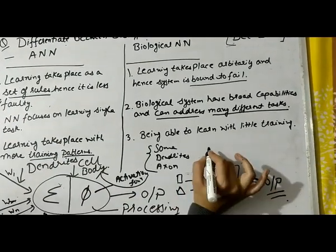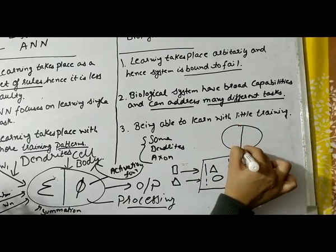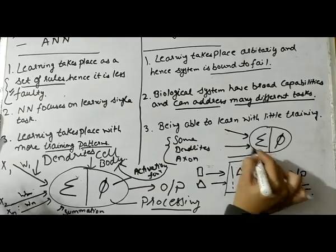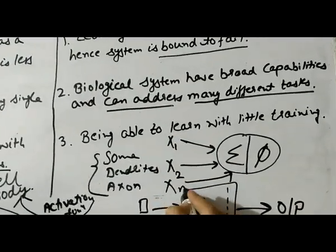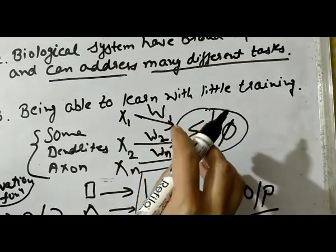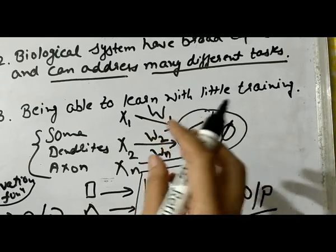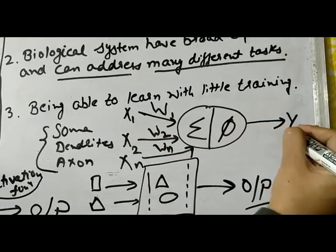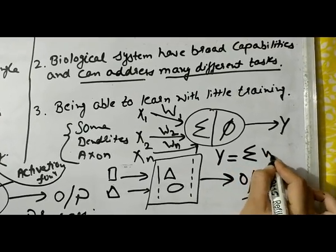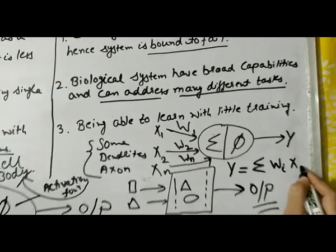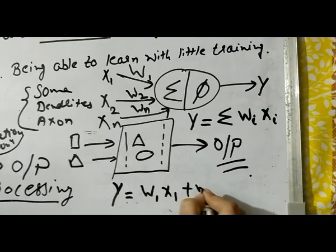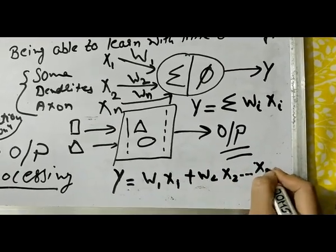When you evaluate this, you get a mathematical formula derived from the structure. You have input values x1, x2, up to xn, and corresponding weight values w1, w2, up to wn. The synapse provides interconnection and helps in neural network evaluation. The formula involves a summation: you multiply each weight by its corresponding input — w1·x1 + w2·x2 + ... + wn·xn — and sum them all up.